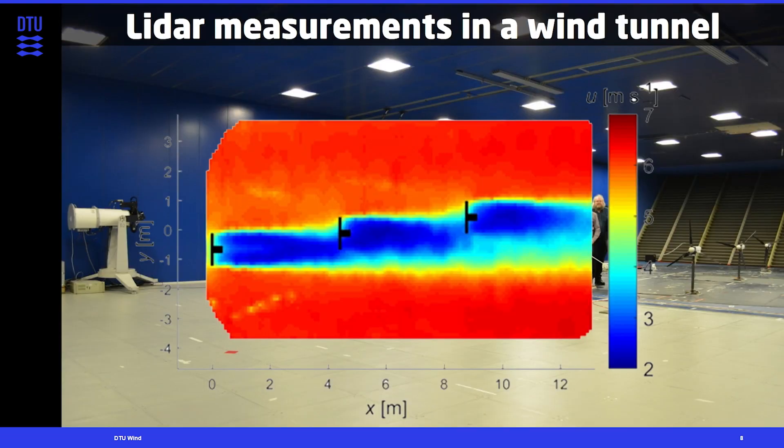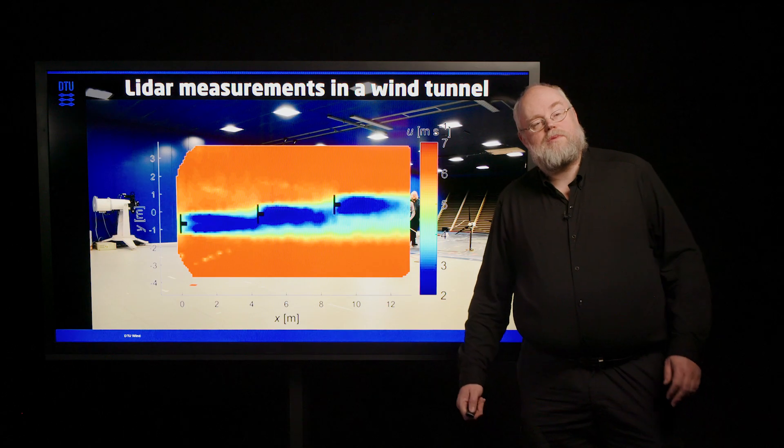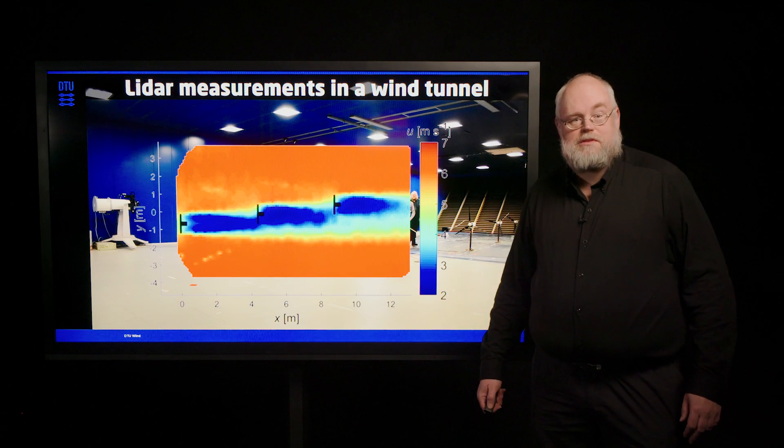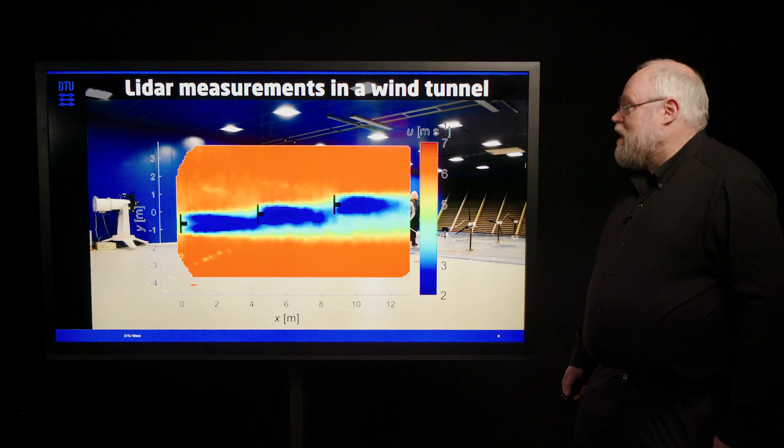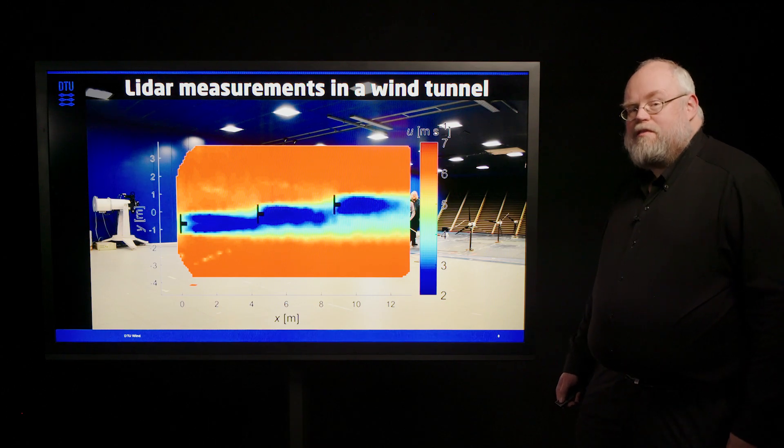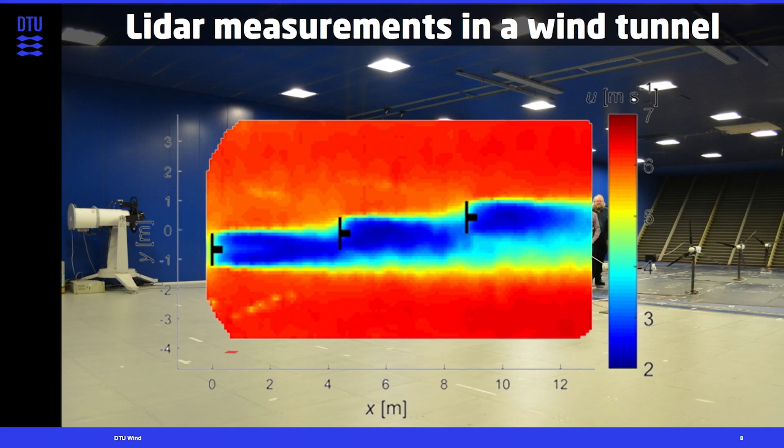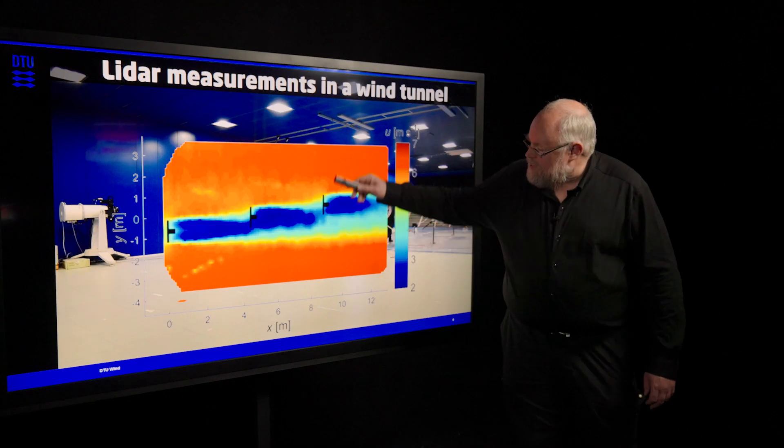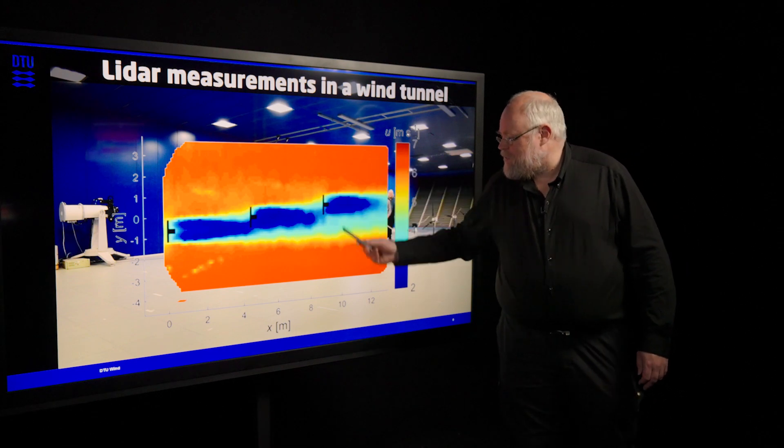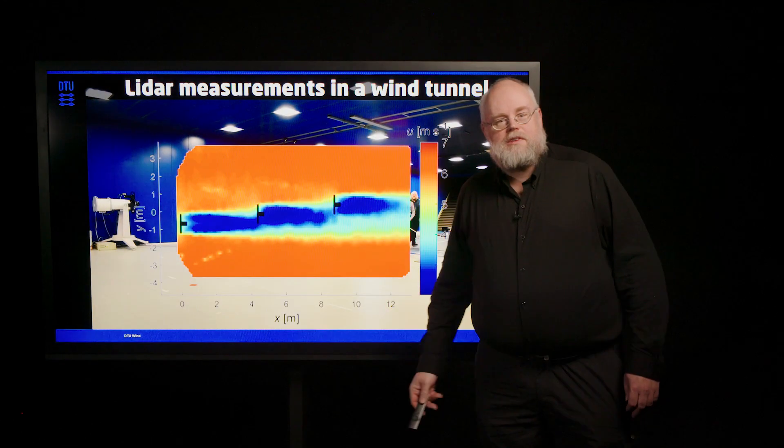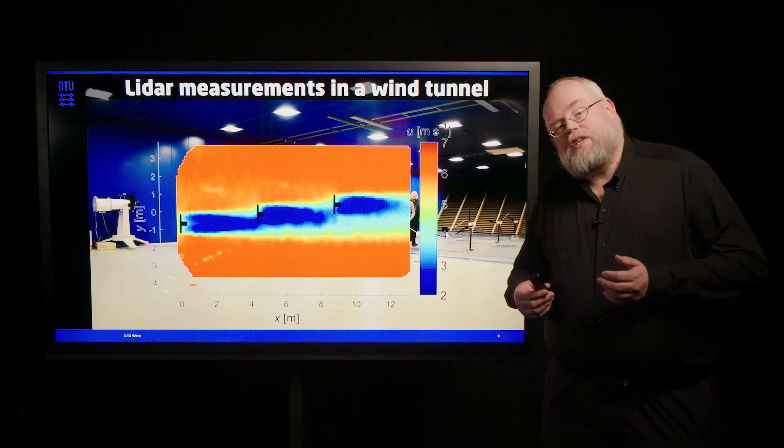In the previous lecture we talked about that you could measure in quite small volumes with a continuous wave lidar if you focus at a close distance. And you can even resolve small flow features in a wind tunnel. And we have an example of that in this image here. Here we have actually a wind farm with three small wind turbines. And what we are seeing here is a horizontal plane of the three turbines. And we can see the wakes of them.